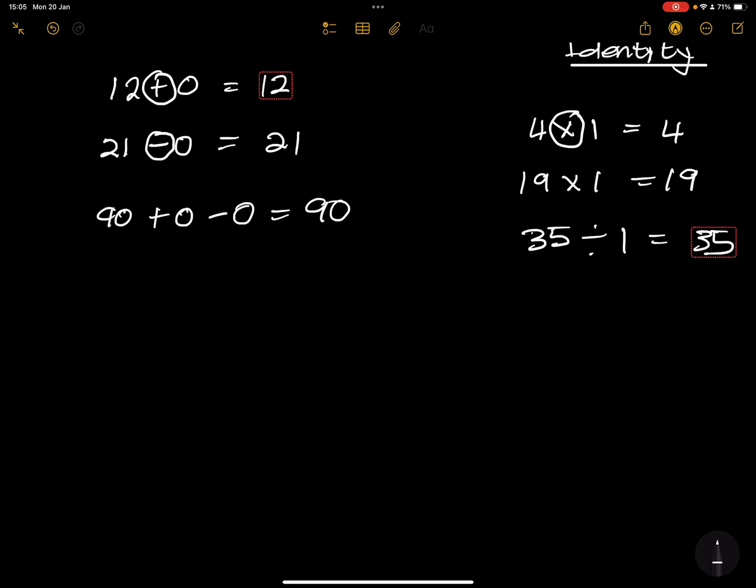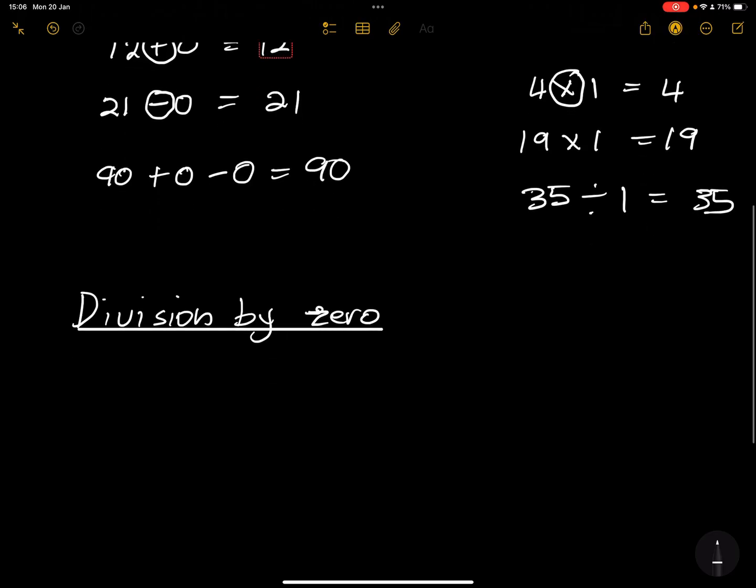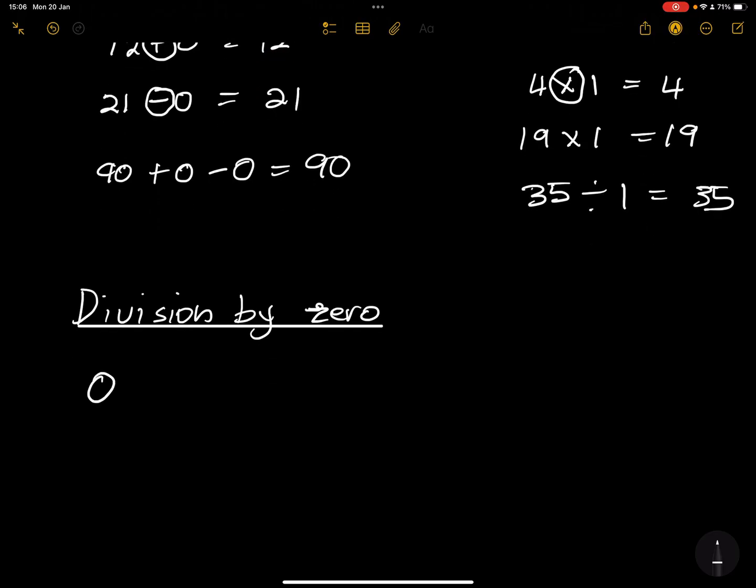please note in this case that there is something that we need to give you caution about. That is division by 0. So if I divide any number by 0, please note that division by 0 gives us a number, or rather is actually said to be undefined. But if I divide 0 by any number, that's an identity.